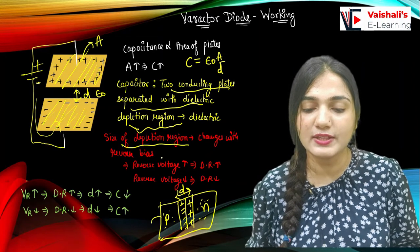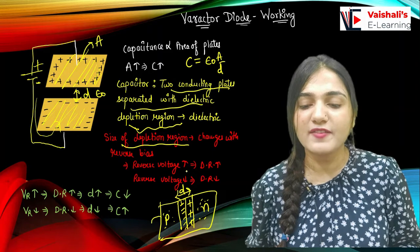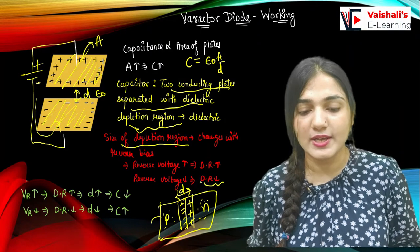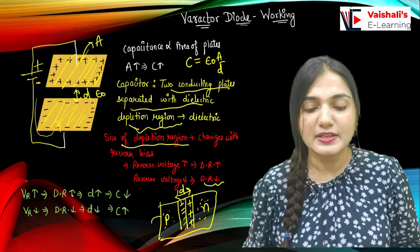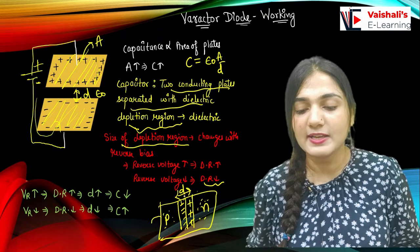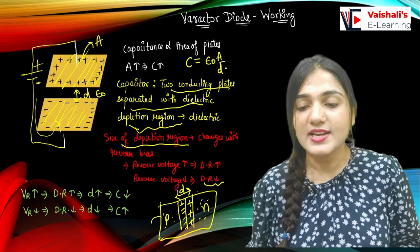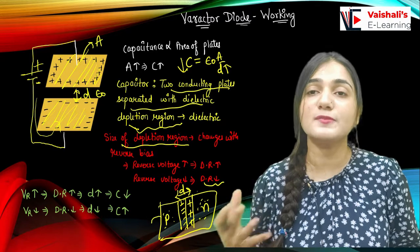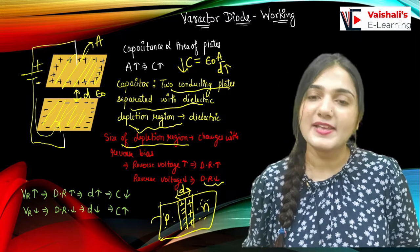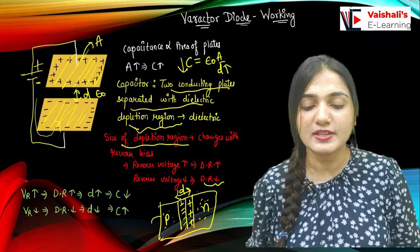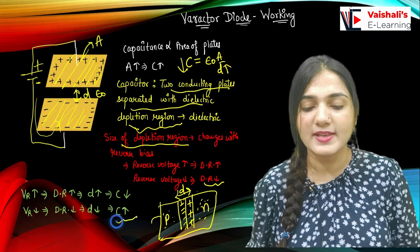As you increase the reverse bias voltage, the depletion region increases — D increases — so the capacitance decreases. If the reverse bias voltage decreases, the depletion region decreases, D decreases, and the capacitance increases. This is how we change the capacitance value by varying the reverse bias voltage.